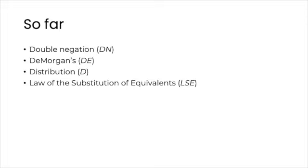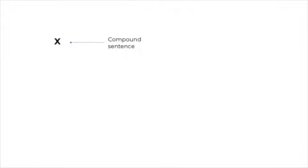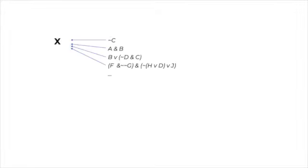So here it goes. Suppose that we have an SL sentence. Call it X. Now X is a compound sentence, and it could be as complex as you want. It could be a negation, a conjunction, a disjunction, a conjunction of disjunctions, whatever.